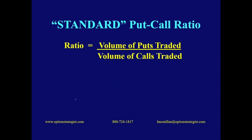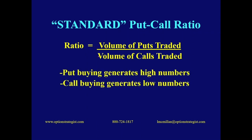It's very simple to calculate. Let's suppose you're looking at IBM — we sum up the volume of all the puts that traded that day, we sum up the volume of all the calls, divide the two, and we get the put-call ratio. Marty Zweig puts puts in the numerator of that fraction and calls in the denominator. As a result, the put-call ratio moves opposite to the direction of the underlying. So when there's heavy put trading, the put-call ratio will go higher — but there's typically heavy put trading when the stock is going lower.